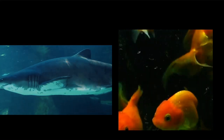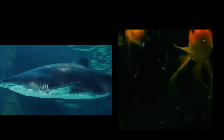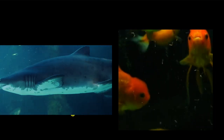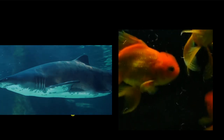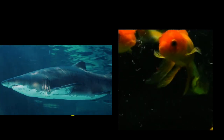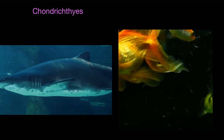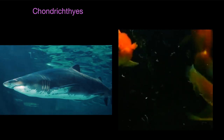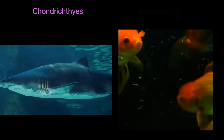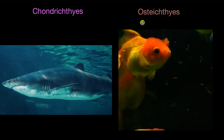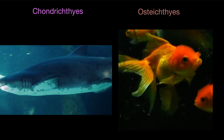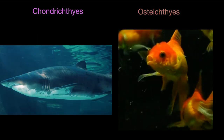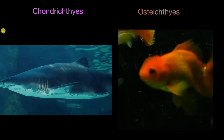This big scary animal and this tiny little thing — both of them are fish. So how are they similar and how are they different? That's what we are going to explore in this video. The great white shark belongs to the class Chondrichthyes and the goldfish belongs to the class Osteichthyes, both of which are fish.